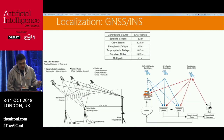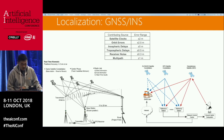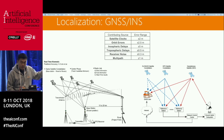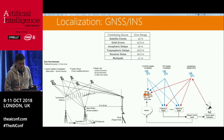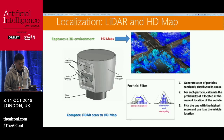For localization, the easiest way to localize yourself is to use GPS, just like your iPhone. For the car, you have a high-end GPS: it's the combination of GNSS and INS, the inertial module. Combining these two sensors gives you very high accuracy. An automotive-grade GNSS receiver costs about $10,000 US dollars. That's the one Google, Baidu, and others use.